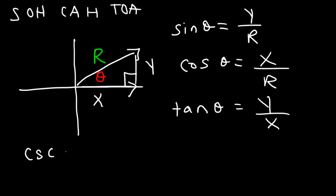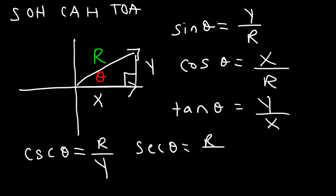Cosecant is the reciprocal of sine, so if sine is y over r, cosecant is r over y. And secant is the reciprocal of cosine, so that's r over x. And cotangent is x divided by y. So those are some values that you need to know.